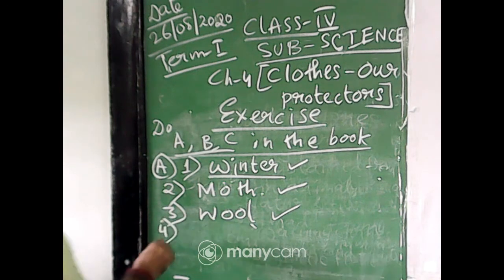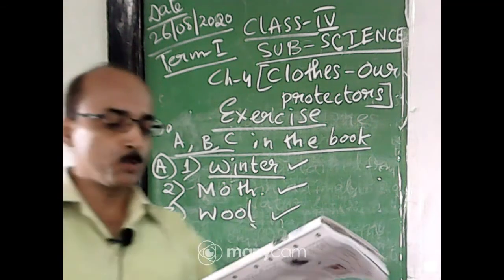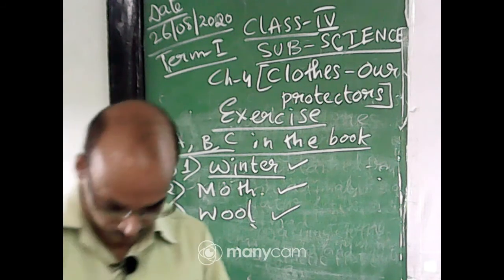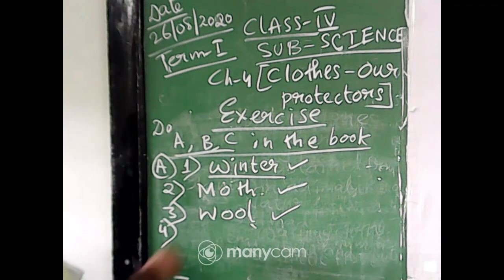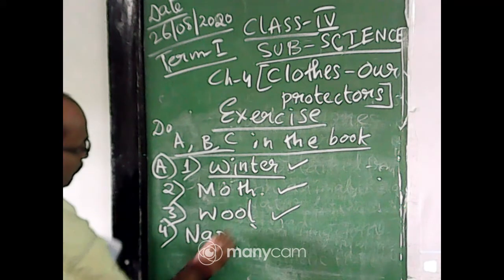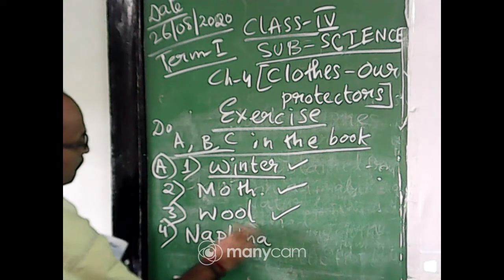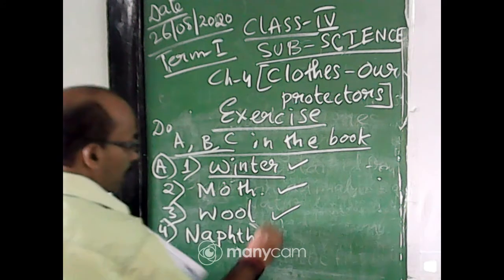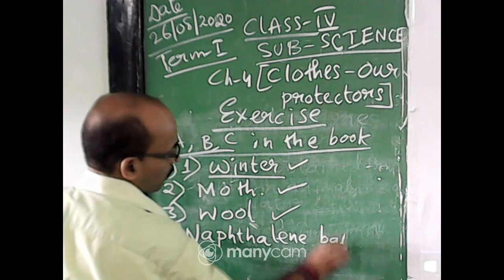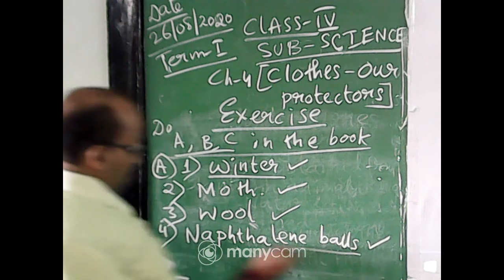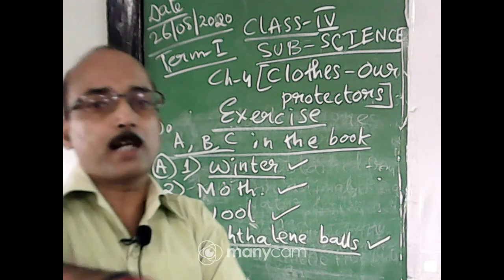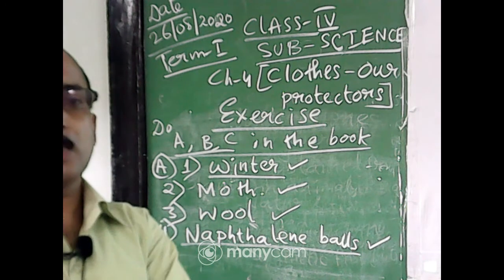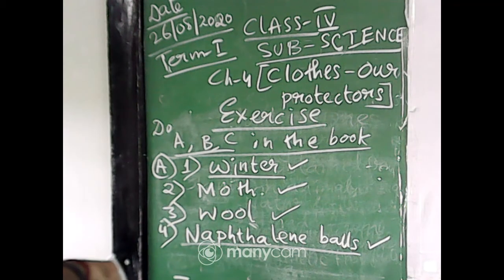Number four: which of the following should be kept in between woolen clothes to keep insects away — perfume, naphthalene balls, or sand balls? The answer is naphthalene balls. The spelling is N-A-P-H-T-H-A-L-E-N-E balls. All of you must have the correct spelling — marks will be deducted for wrong spelling.